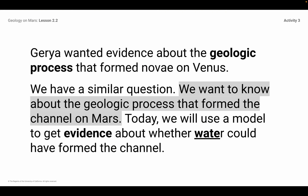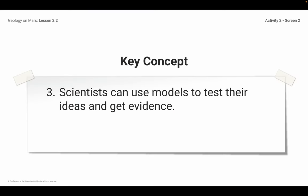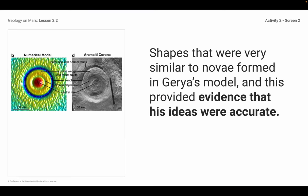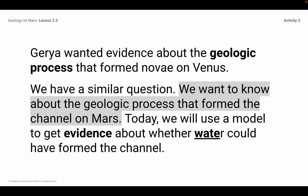This leads us into what we're doing today. The article you read has evidence we're going to use on our final scientific claim — trying to figure out what caused the channel on Mars to form. Garia wanted evidence about the geologic process that formed novae on Venus, and we have a similar question: we want to know about the geologic process that formed the channel on Mars. Today we're going to use a model to get evidence about whether water could have formed that channel.